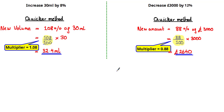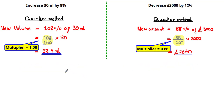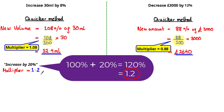As a general rule, the multiplier for a percentage increase will always be a decimal value greater than 1, and the multiplier for a percentage decrease will always be a decimal value between 0 and 1. For example, to increase an amount by 20%, you take 100% plus 20%, which equals 120%. As a decimal, 120% is 1.2, so the multiplier is 1.2.